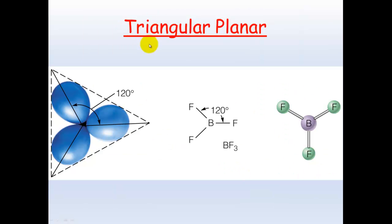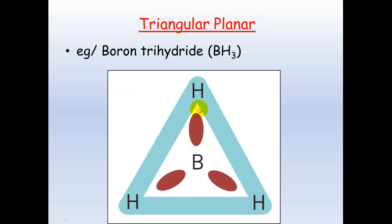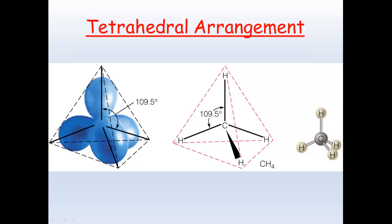Triangular planar: planar means flat and triangular means these are as far apart from each other as they can be, about 120 degrees away from one another. Boron trihydride is one of the only ones that will form this triangular planar shape.